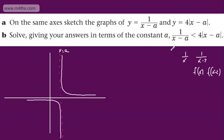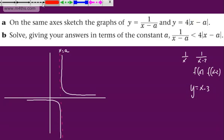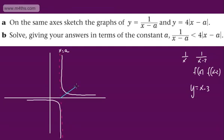We can say that is y = 1/(x - a). The second function, y = 4|x - a|, is just a basic linear function. If y = x - 3, you'd get a straight line. This one has a scale factor stretch of 4. It's going to come through the point where y = 0, so x = a.